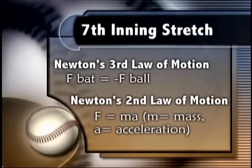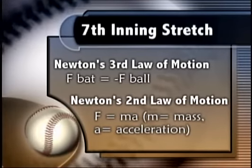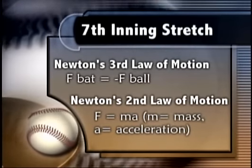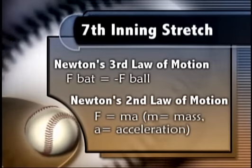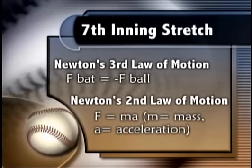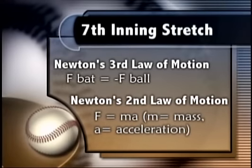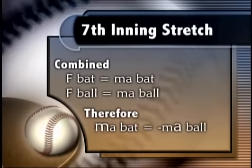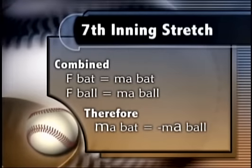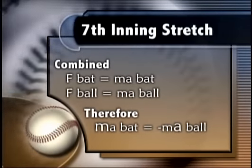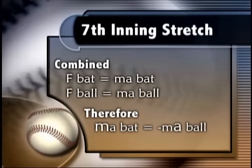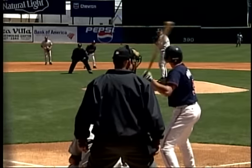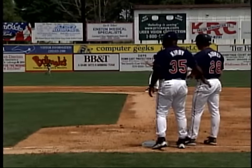Remember that before scientists identified the concept of energy, Newton would have used his three laws of motion. The bat and ball exert equal but opposite forces onto each other throughout the period of impact. For these two forces to be equal, the more massive bat-batter system undergoes a much smaller acceleration, while the less massive baseball experiences drastic acceleration.